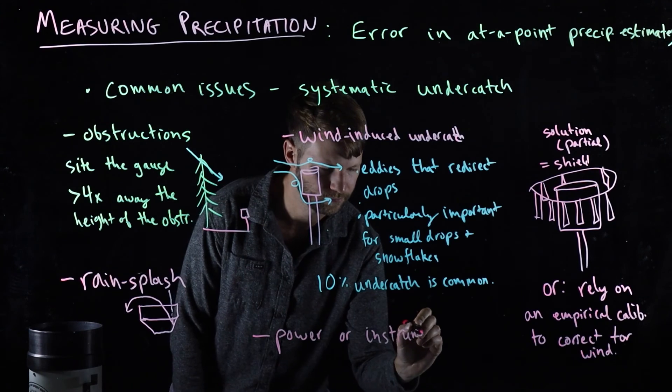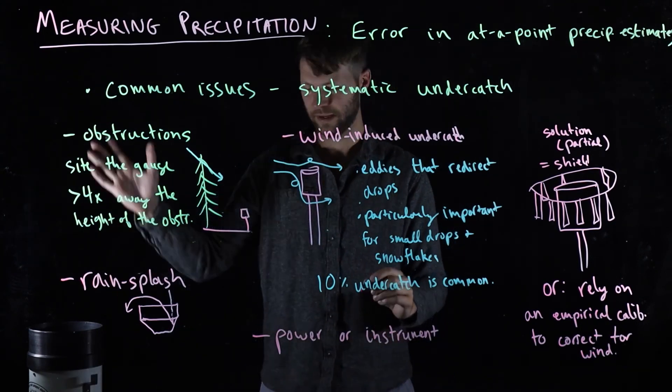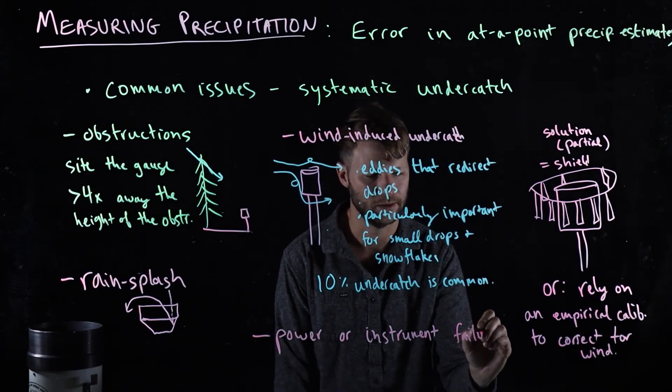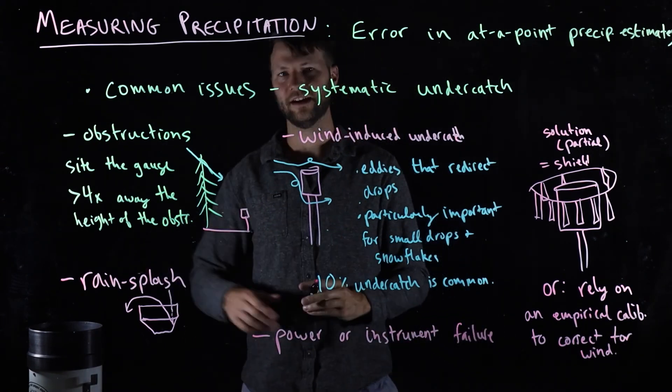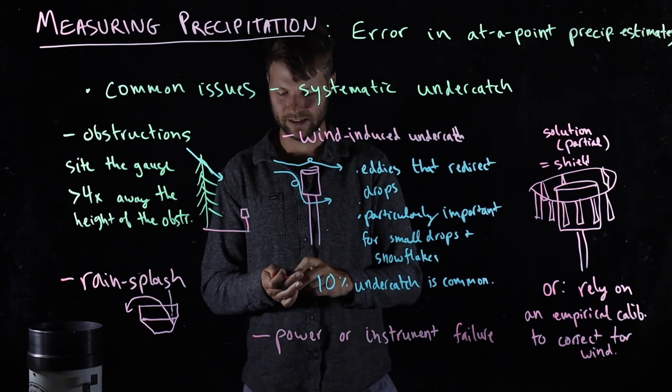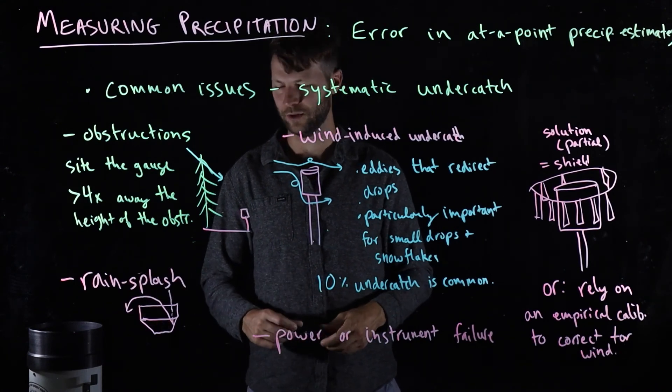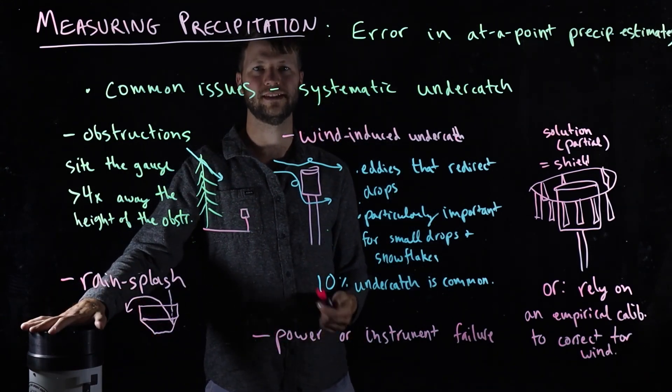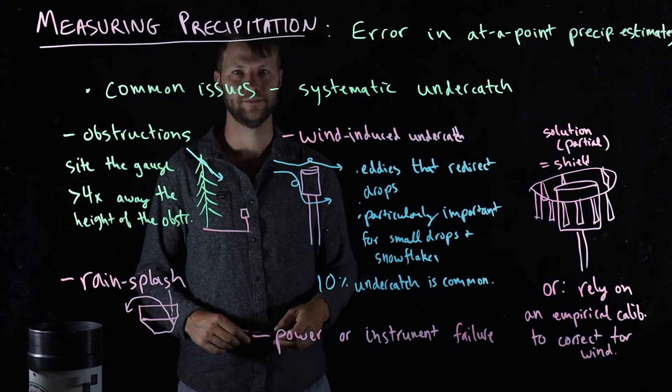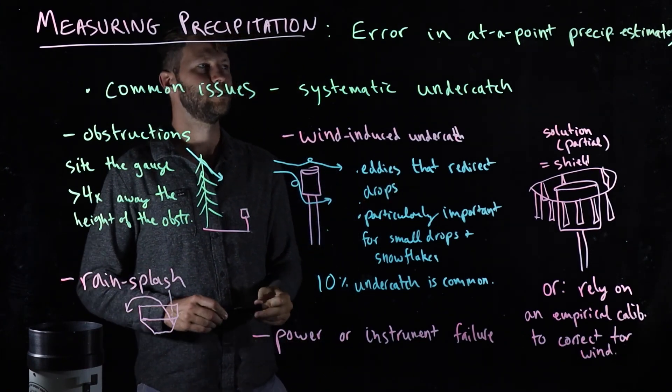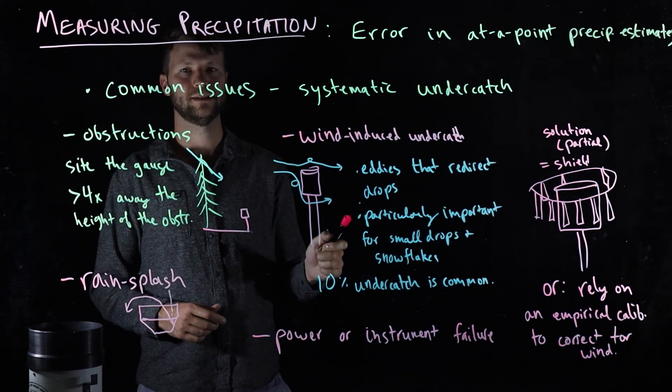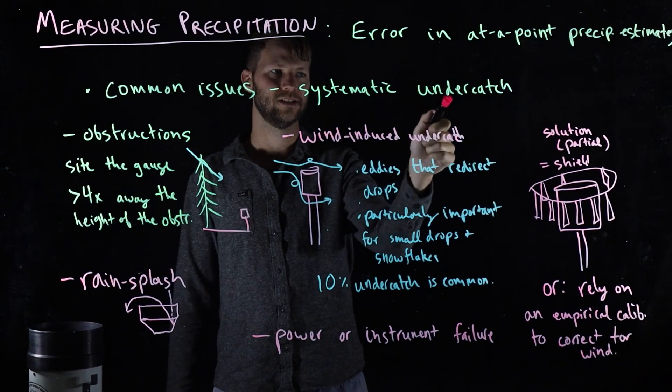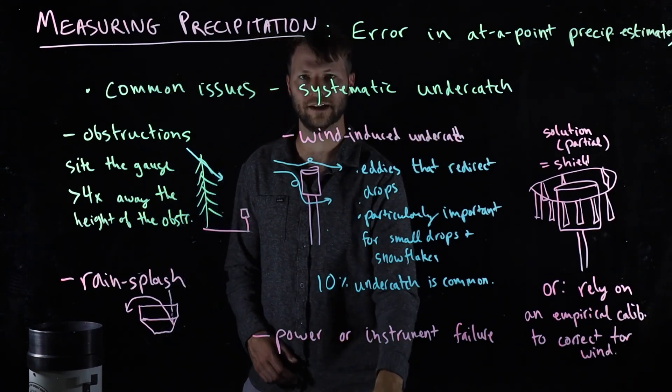So your solar panel could get knocked down, your battery could die, a bear might come along and knock your gauge over, a bunch of ants or mice might decide that it's a good time to chew through your wires. All of these things happen and they result in you missing some amount of rain and not measuring it. So these are all the common ways that we can get error in at-a-point precipitation estimates, and usually they result in an underestimation of the actual amount of precipitation.